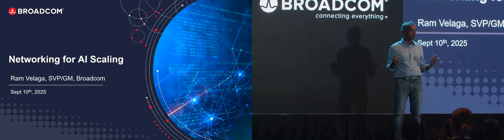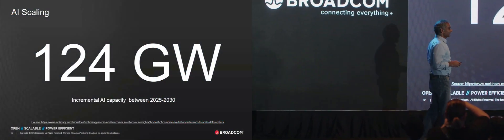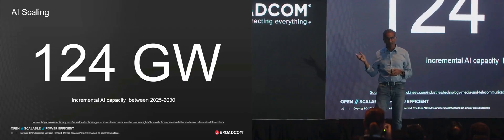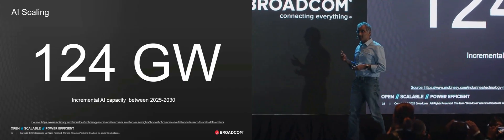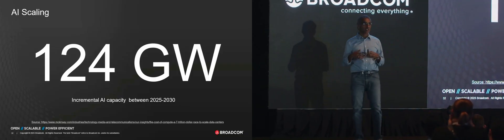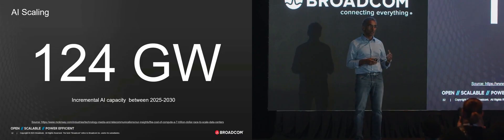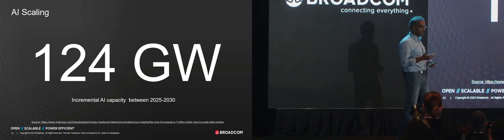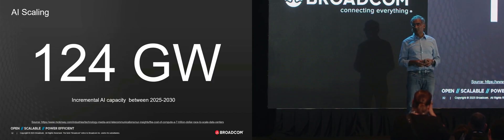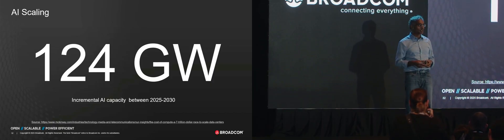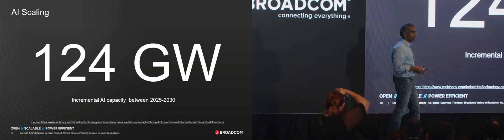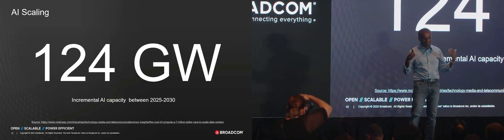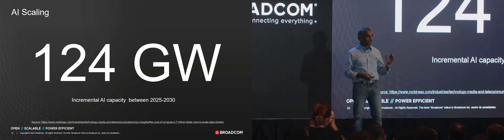We at Broadcom really subscribe to all of this, and there's different ways the same data was presented over the course of this morning. The summary is: over the next five years or so, there's about 124 gigawatts of additional capacity to be brought online. Each gigawatt is roughly about 600,000 of the most advanced GPUs available today, so 124 times 0.6 gets you to about 70-plus million additional GPUs slash XPUs to be deployed over the next five-plus years.